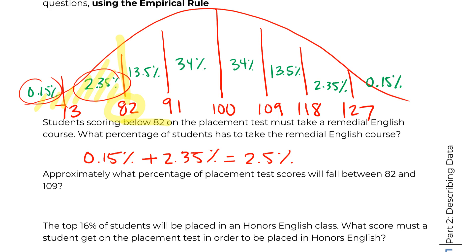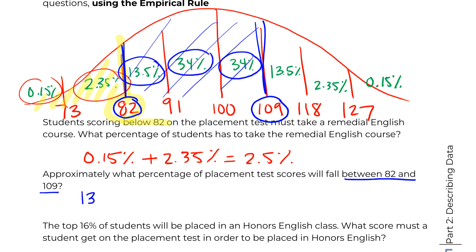The next question says, approximately what percent of placement scores will fall between an 82 and a 109? So we want 82, 109, and then we are interested in between. So that's all of this area, right? So we're just going to take these values and add them up. So 13.5 plus, I'm just going to go ahead and change that to a 68 because I know that that's that middle probability. And this is an 81.5%.